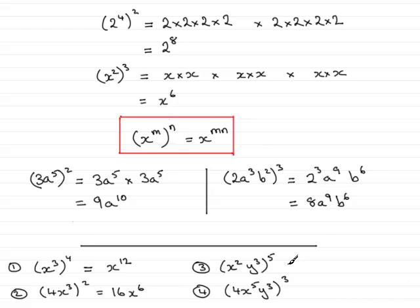In number 3, we've got x squared all to the power 5. So that's going to be x to the power 10. 2 times 5 is 10. And then y cubed to the power 5. So that becomes y to the power 15. By doing 3 times 5, which is 15.